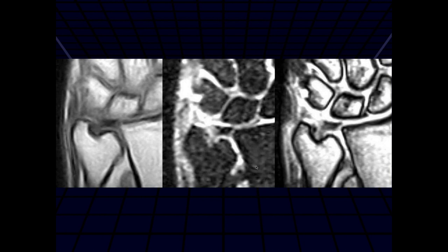So we have coronal images of the wrist. In the middle picture, there's some increased signal at the base of the styloid process. This is a T1, a STIR, and a T2 gradient echo. We can see the peripheral tear here.